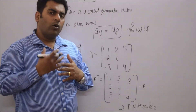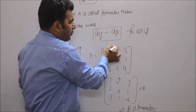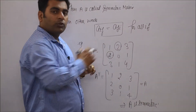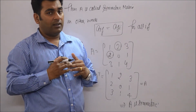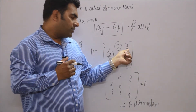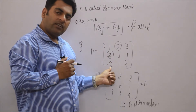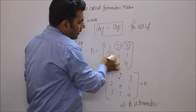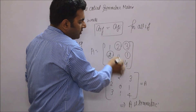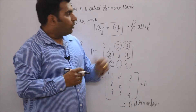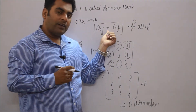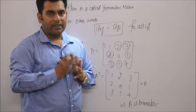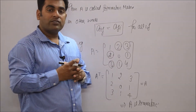We can also check symmetry by an alternative method: look at position (1,2) and (2,1) — both are equal. Position (1,3) and (3,1) — both are equal. Position (2,3) and (3,2) — both are equal. On the basis of this condition, aᵢⱼ = aⱼᵢ for all i and j, so we can confirm this matrix is symmetric.